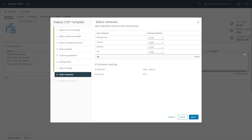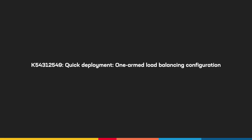On the Select Networks page, select the network for each of the pre-configured source networks, then select Next. The OVA template is pre-configured with four virtual network interfaces. In this example, the BigIP will be deployed in a one-arm configuration, which means that the virtual servers and the load-balanced servers will share the same VLAN. For more information about one-arm deployments, refer to this article linked in the description below.